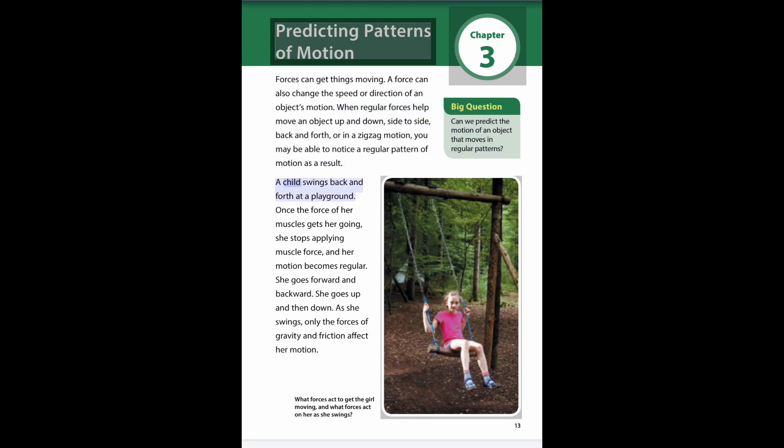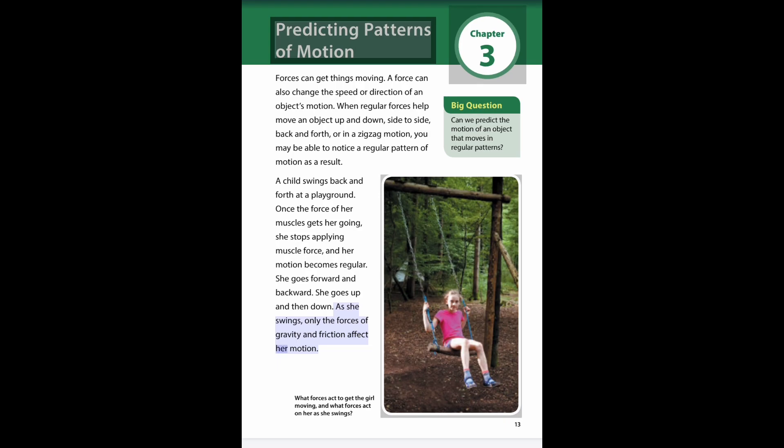A child swings back and forth at a playground. Once the force of her muscles gets her going, she stops applying muscle force, and her motion becomes regular. She goes forward and backward, up and then down. As she swings, only the forces of gravity and friction act on her motion.